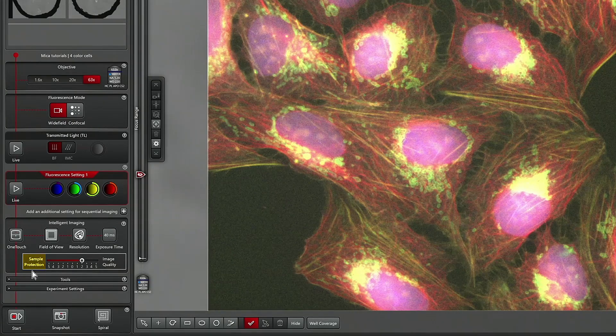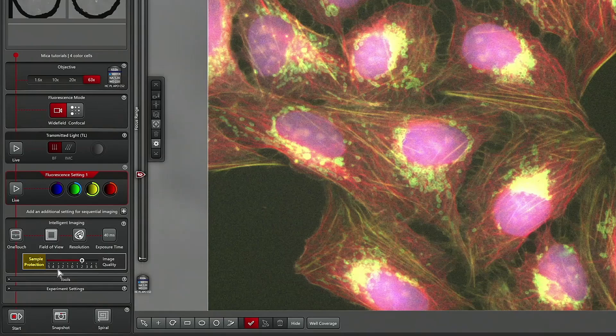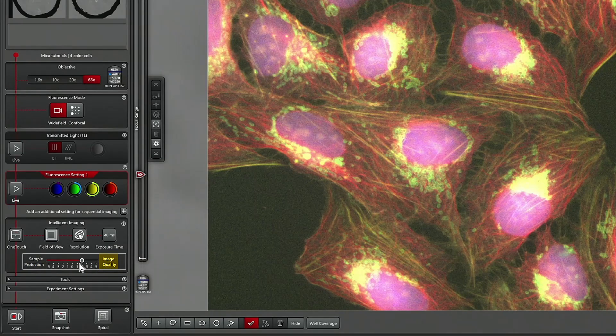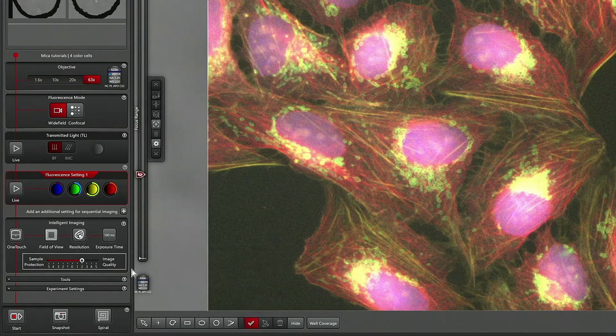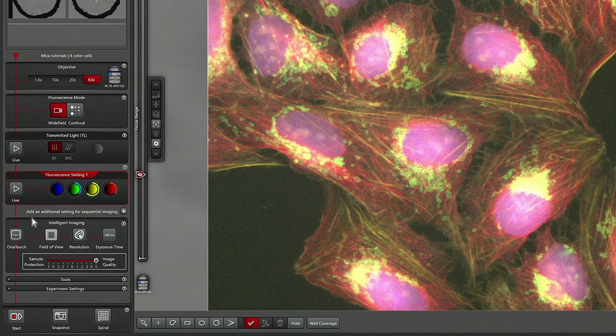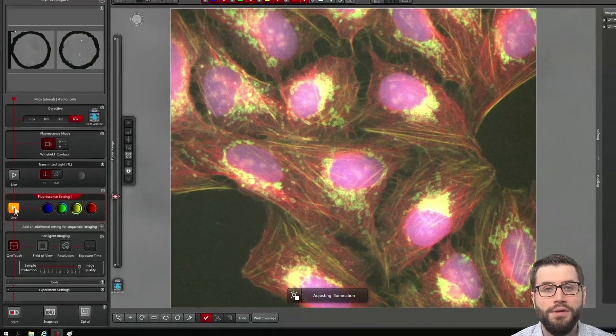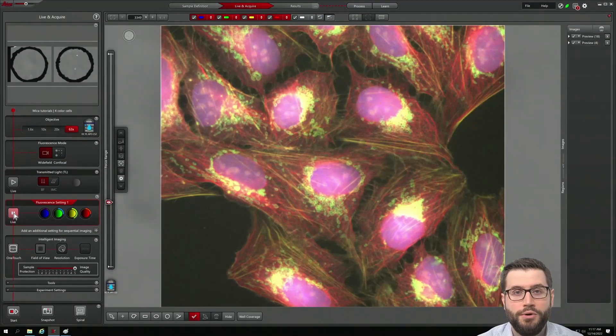You also have a slider that ranges between sample protection and high image quality. So if you want to adjust your imaging parameters, simply select a different exposure time, a higher image quality, and click on live and Mika will automatically adjust the imaging parameters for you.